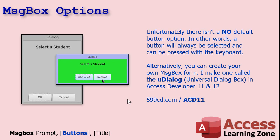Now, this has come up a couple of times in my forums over the last couple of years — unfortunately, there isn't a 'no default button' option. In other words, when that message box pops up, one of those buttons will always be selected. So if the user hits Spacebar or Enter, it's going to push a button. You want to make sure it's the safest option, because there's no way to turn that off. Not with the built-in message box. In my Access Developer 11 and 12 classes, I do show you how to build a Universal Dialog Box where you can control colors, message, title, button captions, and whether or not there's a default button.